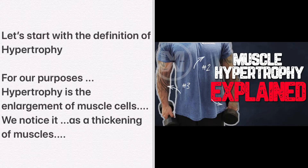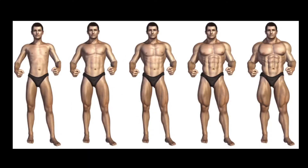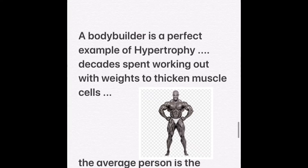Let's start with the definition of hypertrophy. For our purposes, hypertrophy is the enlargement of muscle cells. We notice it as the thickening of muscles. It's most noticeable when we haven't seen someone for a while — we see their muscle growth as they mature or because of the effects of exercise on their body. A bodybuilder is a perfect example of hypertrophy.